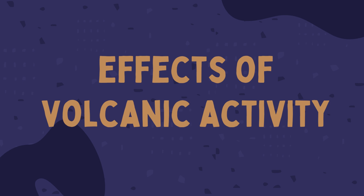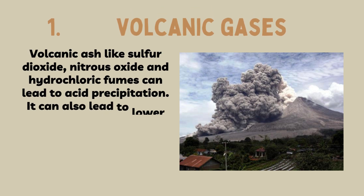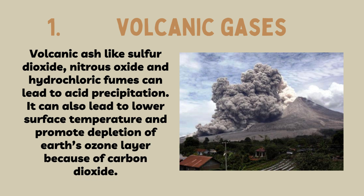What are the effects of volcanic activity? Volcanic gases: volcanic ash like sulfur dioxide, nitrous oxide, and hydrochloric fumes can lead to acid precipitation. It can also lead to lower surface temperature and promote depletion of Earth's ozone layer because of carbon dioxide. Poisonous gases such as carbon dioxide, carbon monoxide, and sulfur dioxide can travel down a volcano and suffocate wildlife and humans.